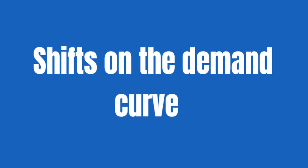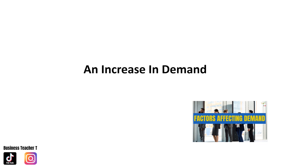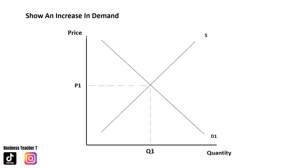Let's take a look at what a shift on the demand curve would look like. First, an increase in demand. We start with the X, fully label the axes, the demand curve, and the supply curve, and draw the equilibrium. Now we draw a new demand curve to show the increase in demand and label it as D2. Then we draw a new equilibrium, labeling it Q2 on the horizontal axis and P2 on the vertical axis.